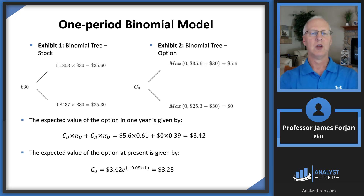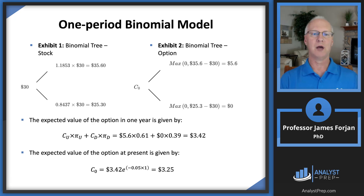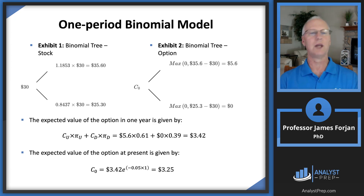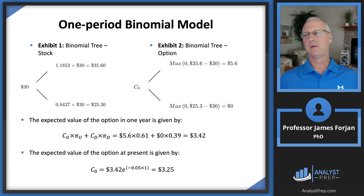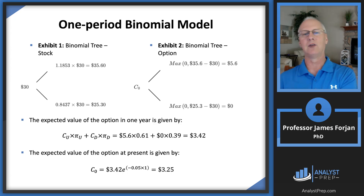Back to the original framework: you come to me and say you want to buy this at-the-money option. Given those conditions, you owe me $3.25 today, and I hand you a piece of paper giving you the right but not the obligation to buy that share of stock from me for $30. We let one year go by — you can exercise whenever you want if it's an American option, or wait until expiration if it's a European option. At the end, you're either going to exercise or not, getting either $5.60 or $0.